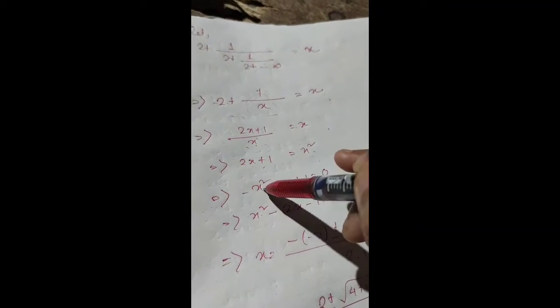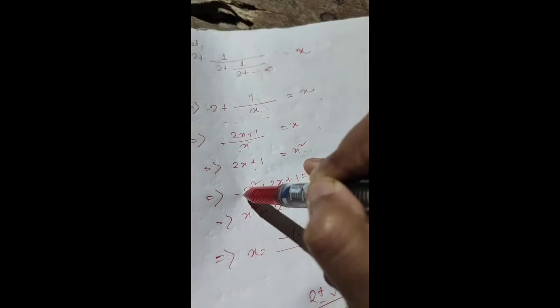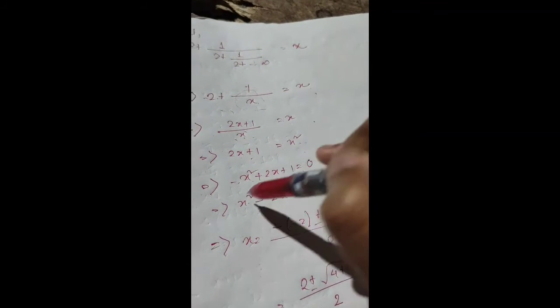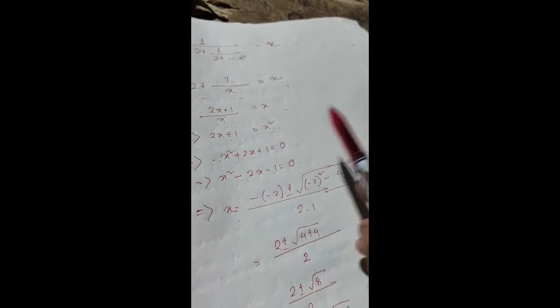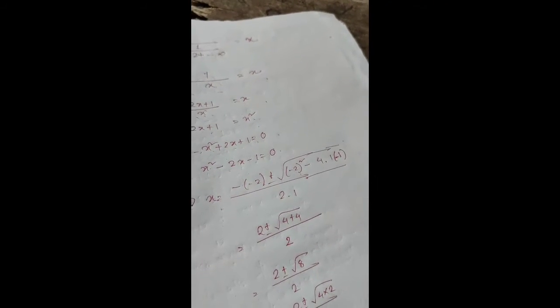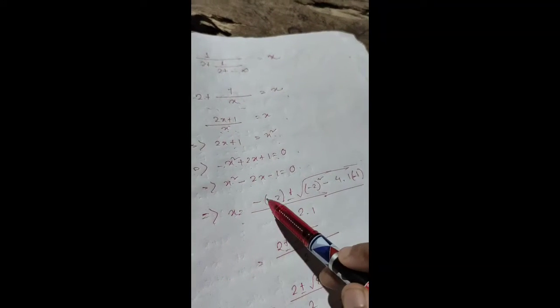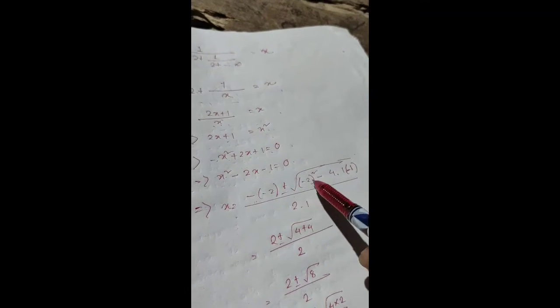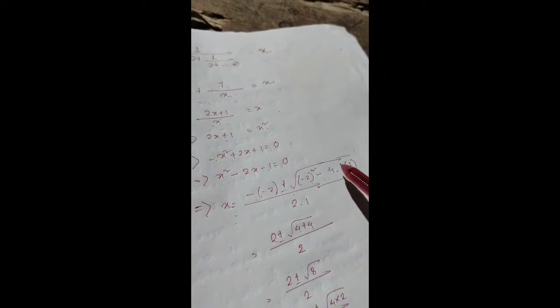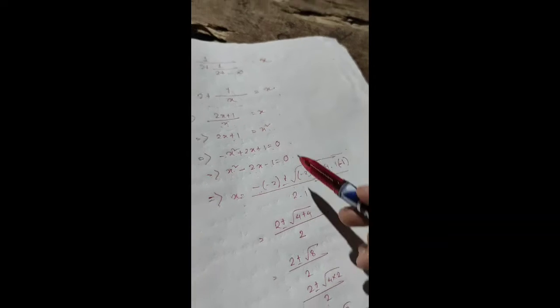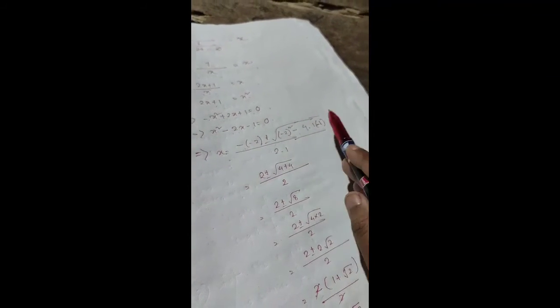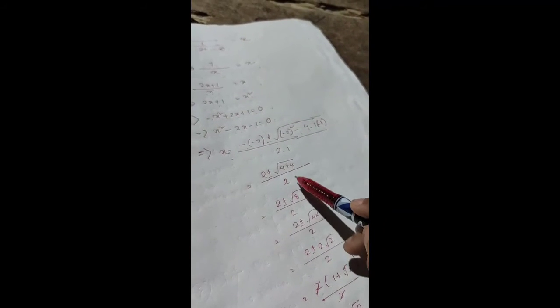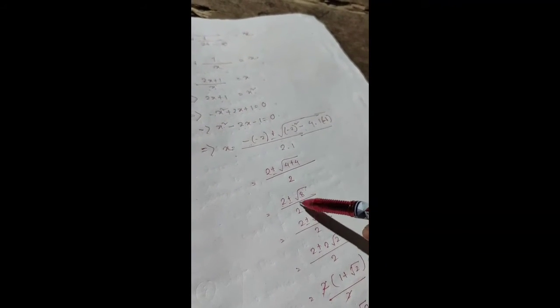Multiplying by x: 2x + 1 = x². Rearranging: x² - 2x - 1 = 0. Using the quadratic formula: x = (-b ± √(b² - 4ac))/2a. So x = (2 ± √(4 + 4))/2 = (2 ± √8)/2.